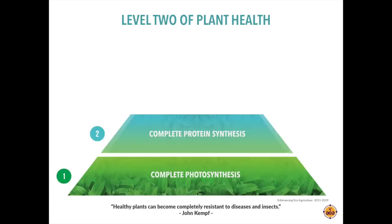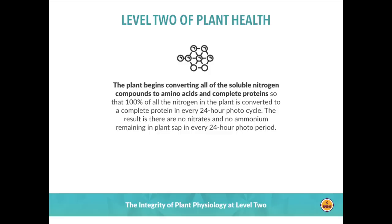When we look at level two of the plant health pyramid, in each 24-hour photo period, plants are rapidly converting all of the nitrogen they absorb in its various forms from the soil profile into amino acids, peptides, and complete proteins. On a sap analysis we measure nitrate and ammonium levels within the plant, and our objective is to observe both at zero while the plant has an abundant level of total nitrogen. This leads to very strong resistance to insects which have simpler digestive systems and are dependent on these nitrogen sources to develop their own proteins.